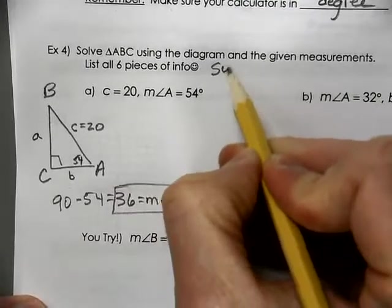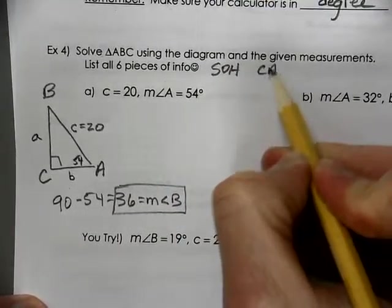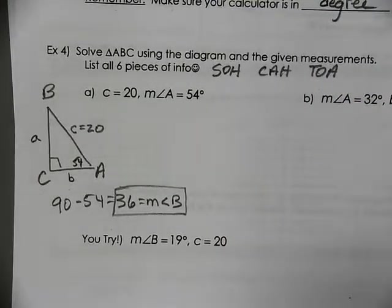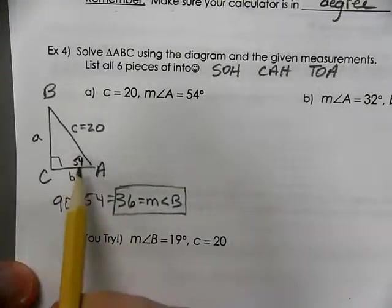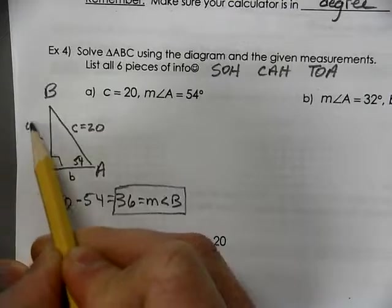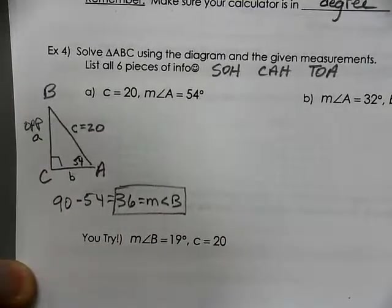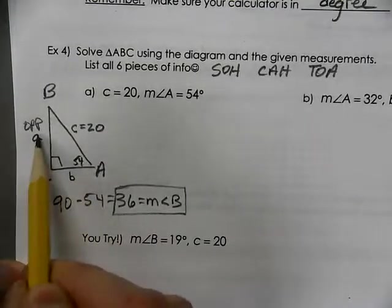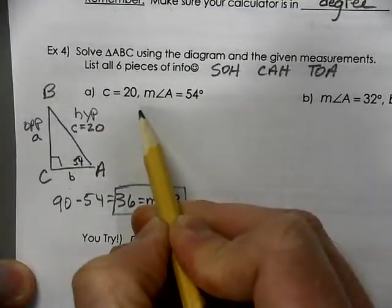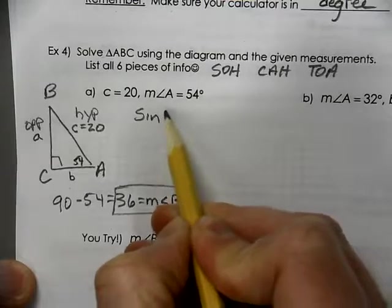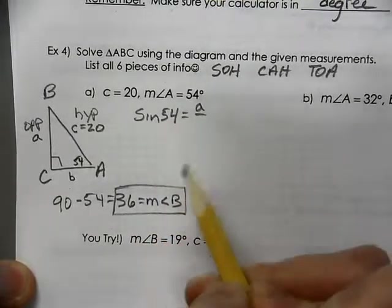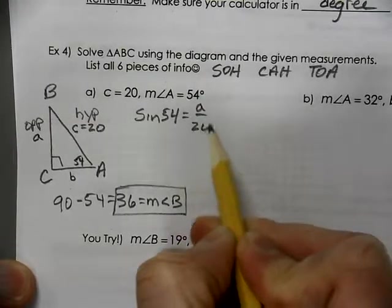Using the idea of SOHCAHTOA, that helps remind us what the trig functions are. I can now find an opposite side to angle A by using sine, opposite over hypotenuse. Hypotenuse is always across from the 90. So sine of 54 is going to equal the opposite side over the hypotenuse, which is 20.